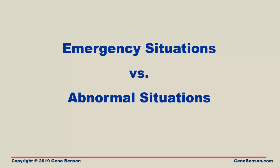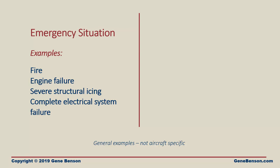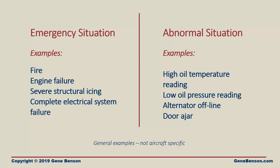Here are some examples to illustrate the difference between emergency situations and abnormal situations. Of course, these are not complete lists, and individual items may not apply to every type of airplane. We can agree that things like a fire or sudden engine failure would be emergencies — there are probably recommended procedures for dealing with them in the airplane flight manual or pilot's operating handbook. But a high oil temperature reading, an alternator dropping off line, or a door popping open aren't emergencies, but are not normal — therefore, we call them abnormal situations.